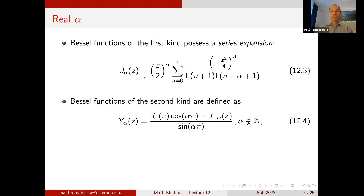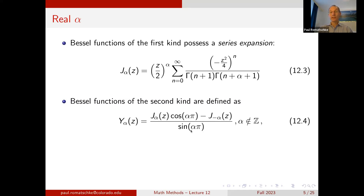The Bessel functions of the second kind are defined by a combination of the Bessel functions of the first kind given in equation 12.4, as long as α is not an integer. It's a combination of J_α times cosine(απ) minus J_{−α}, divided by sine(απ). If α is an integer, some of these sine and cosine factors will be zero, so this definition cannot be used.